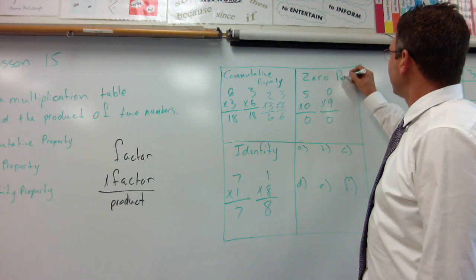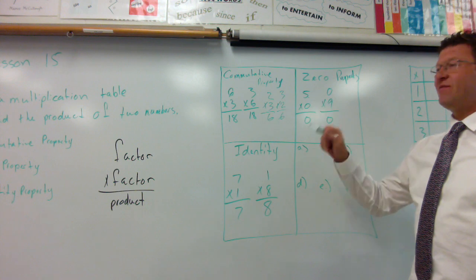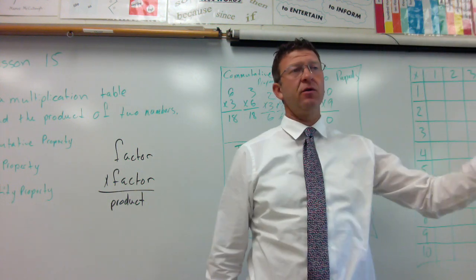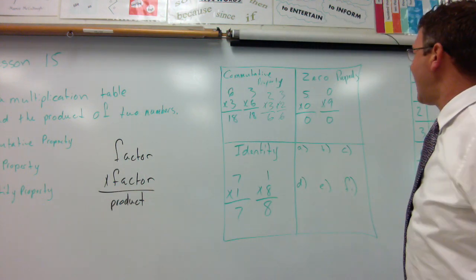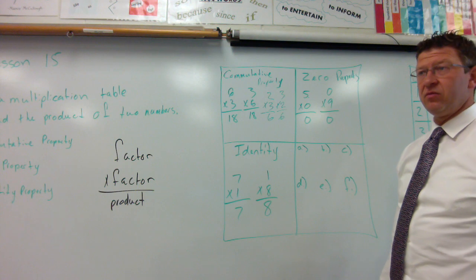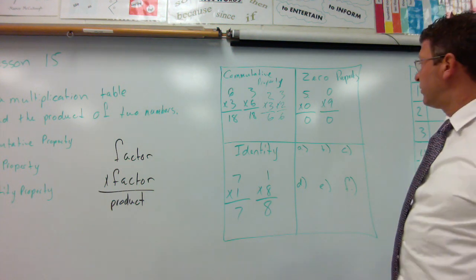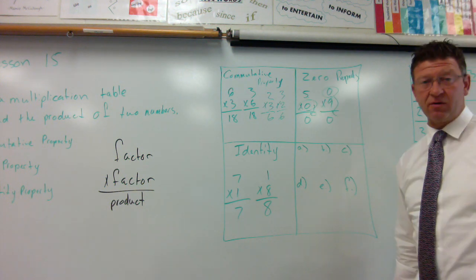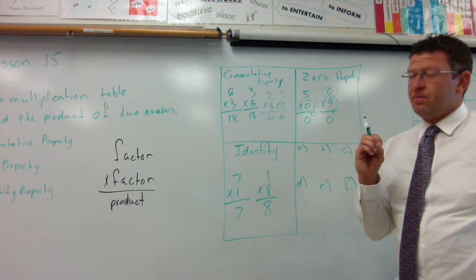Here's the next one, the zero property. And that just says any number, five, times zero equals zero. Five groups of zero - I have zero desks in a row and I have five groups of those zero desks and I have how many desks in my classroom? Zero. Five groups of zero is zero or zero groups of nine is still zero. There's nine oranges in a basket but I have zero baskets, so I have zero oranges. So any number times zero is zero. One million four hundred forty two thousand times zero is zero.